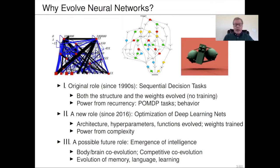Neuro-evolution actually advanced the state of the art in reinforcement learning in POMDP tasks and still does. There are lots of applications like that where evolution is powerful. But since a couple of years ago, a new role for neuro-evolution has started to emerge — in conjunction with deep learning and gradient descent — as optimization of network designs that are then trained in a second phase with backpropagation or gradient descent. We can evolve several aspects: architecture, hyperparameters, activation functions, loss functions, and so on.